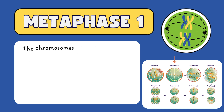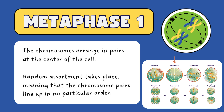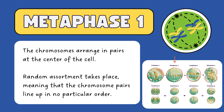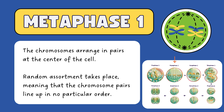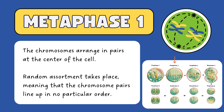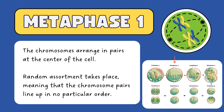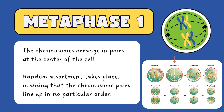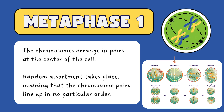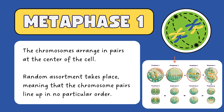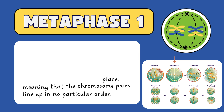Moving on to metaphase I, the chromosomes arrange themselves in pairs at the center of the cell. During this stage, random assortment takes place, meaning that the chromosome pairs line up in no particular order. This randomness is crucial for genetic variation.